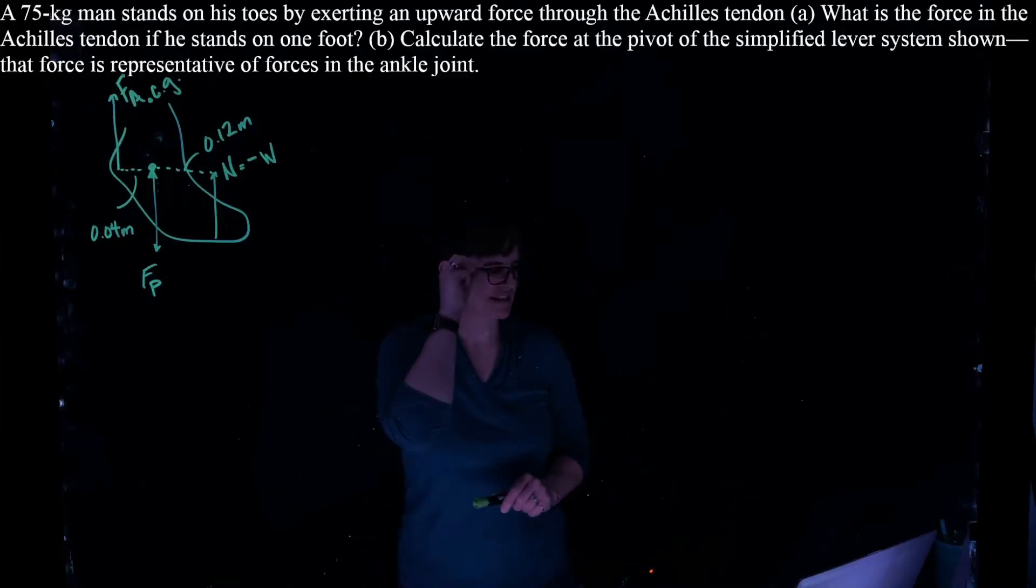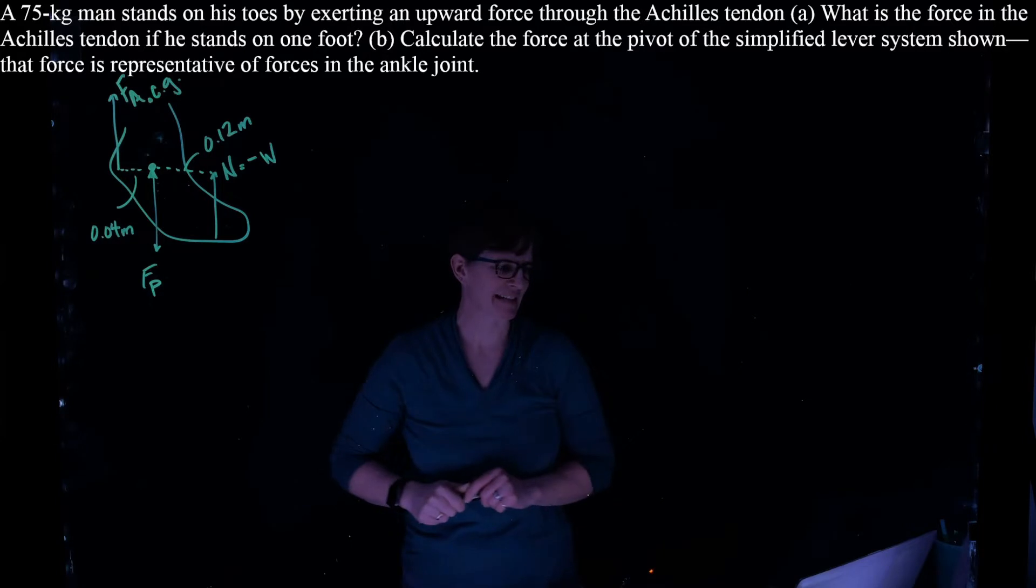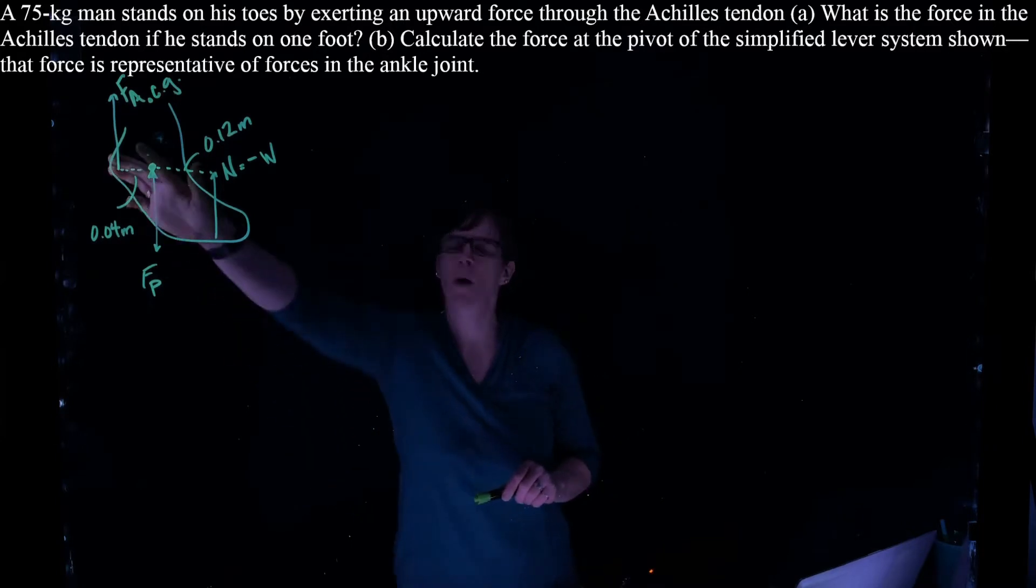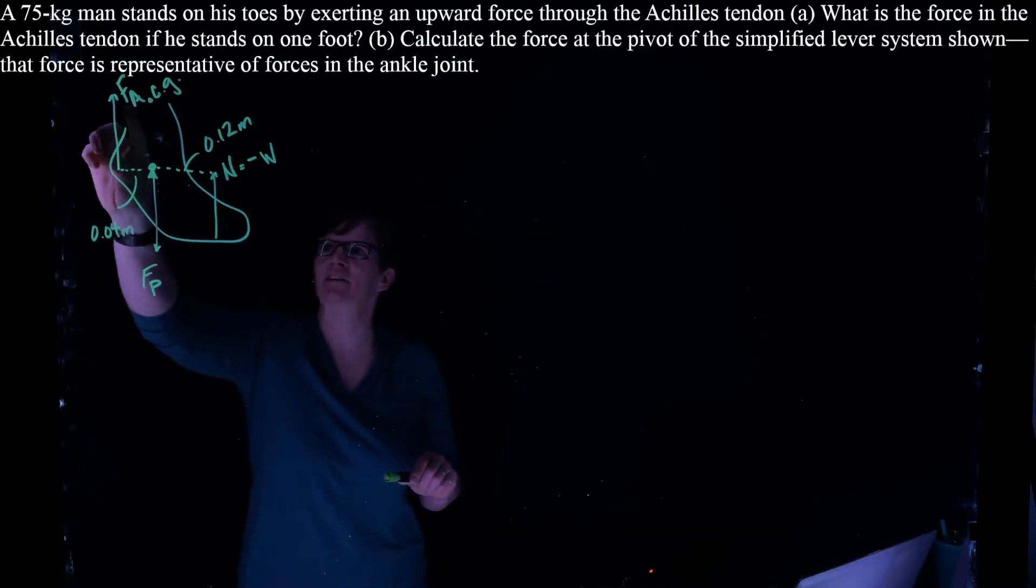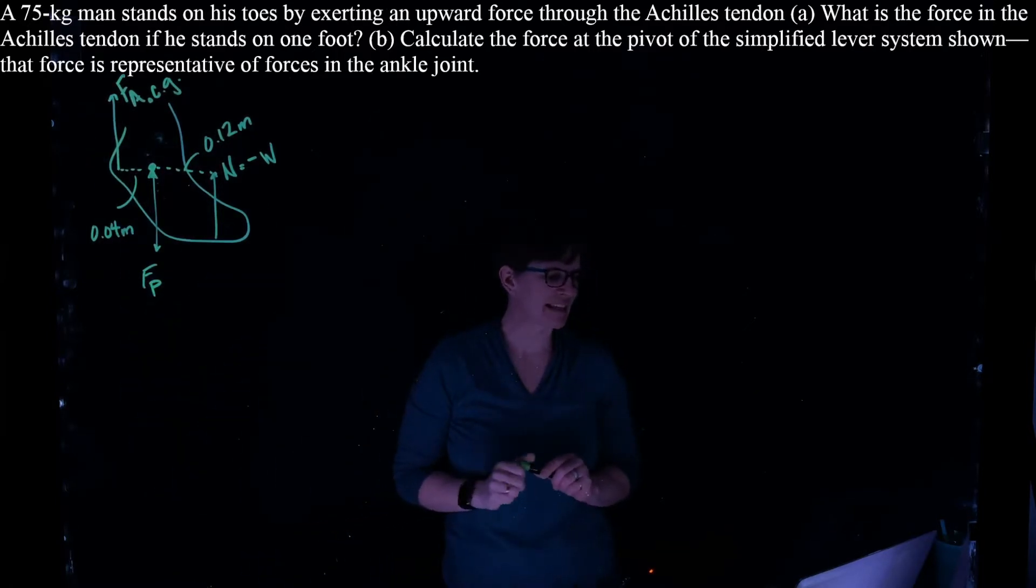Okay, so this problem reads: a 75 kilogram man stands on his toes by exerting an upward force through the Achilles tendon. So that's represented here as force A. What is the force in the Achilles tendon if he stands on one foot?